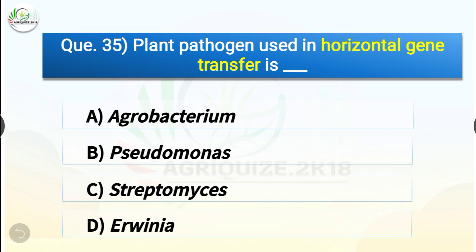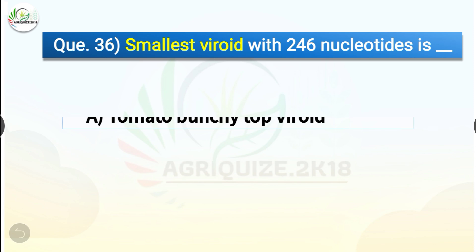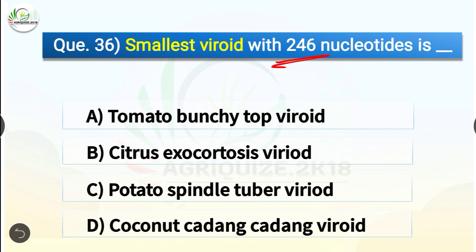Plant pathogen used in horizontal gene transfer is Agrobacterium. Question number thirty-six: Smallest viroid with 246 nucleotides is dash. The options are tomato bunchy top viroid, citrus exocortis viroid, potato spindle tuber viroid, or coconut kadang-kadang viroid. The correct answer is option D, coconut kadang-kadang viroid. The smallest viroid with 246 nucleotides is coconut kadang-kadang viroid.